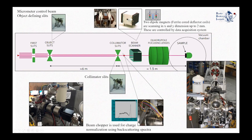After this chopper, the beam enters the beam scanner. This is composed of two dipole magnets, called deflector coils, which scan the beam in x and y dimensions. They can give us a scan distance of up to two millimeters and are controlled by the data acquisition system. Then the beam enters the quadrupole system and finally enters the microprobe chamber.